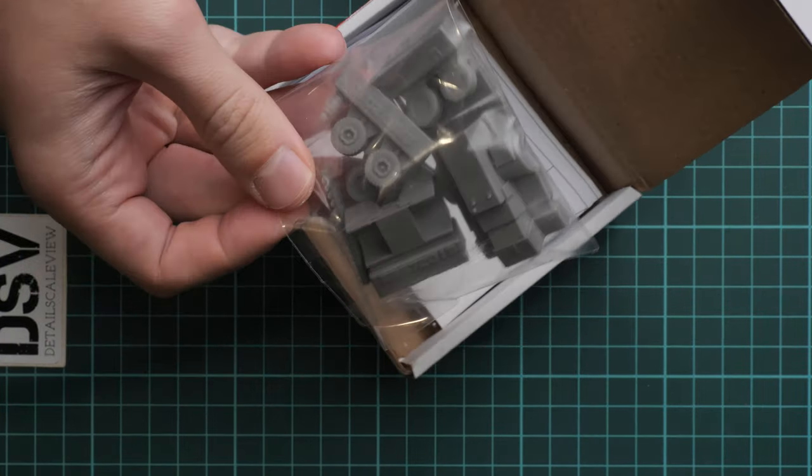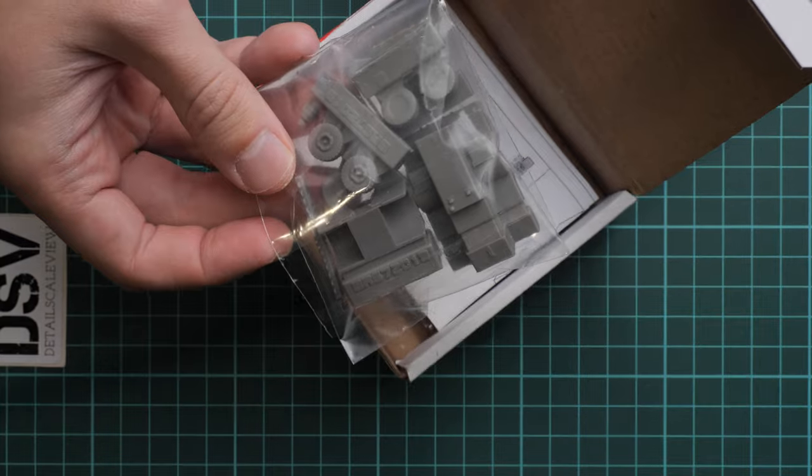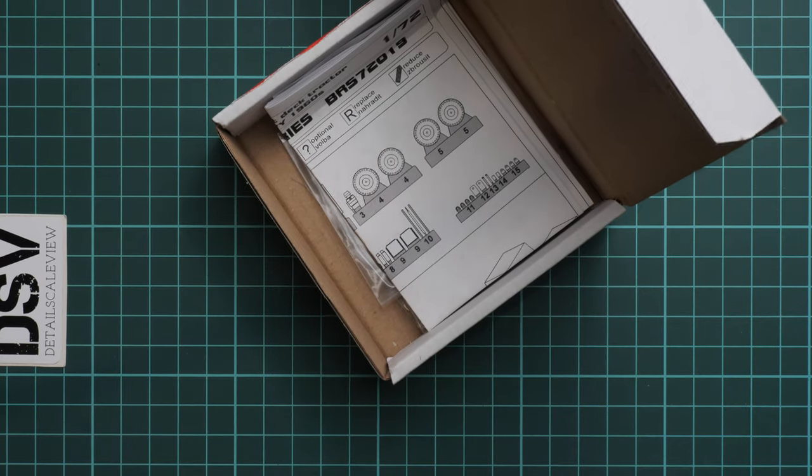So all parts are packed into this one plastic bag and then we have assembly manual on the bottom, but we will check it a bit later. So here we are going to start with these resin parts which are packed into this plastic bag. First of all, I would like to show you wheels.